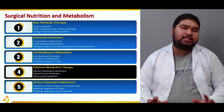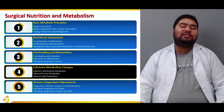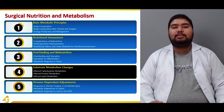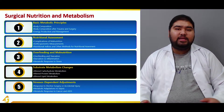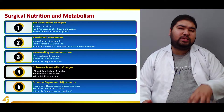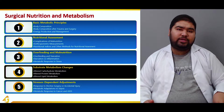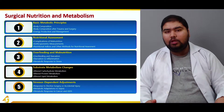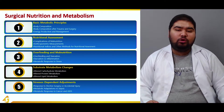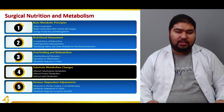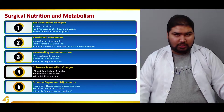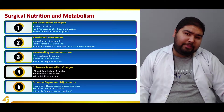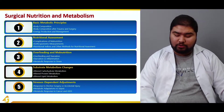We have three substrates as foods in the human body: carbohydrates, lipids, and fats. We'll see what happens to all of these when a stressor comes to the body, be it an elective surgery, a trauma, or a burn. We'll cover altered carbohydrate metabolism, altered lipid metabolism, and altered fat metabolism.